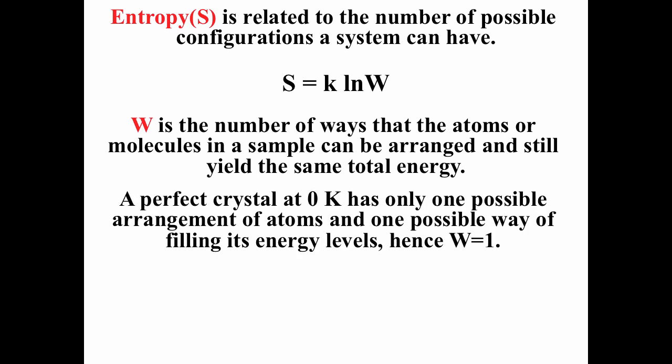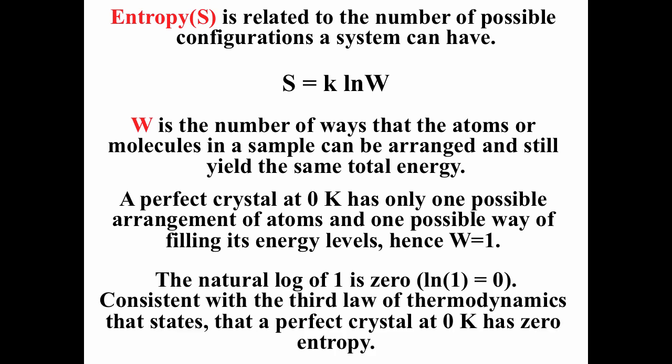A perfect crystal at zero Kelvin has only one possible arrangement of atoms and one possible way of filling the energy levels. Perfect crystal means one way of arranging the atoms; zero Kelvin means one way of filling the energy levels. So the number of configurations W equals one, and natural log of one equals zero. The third law of thermodynamics follows directly: a perfect crystal at zero Kelvin has an entropy of zero, from S equals k natural log W.